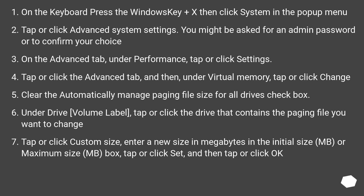Windows 8: On the keyboard press the Windows key plus X, then click System in the pop-up menu. Tap or click Advanced System Settings. You might be asked for an admin password or to confirm your choice. On the Advanced tab, under Performance, tap or click Settings. Tap or click the Advanced tab. Then, under Virtual Memory, tap or click Change. Clear the 'Automatically manage paging file size for all drives' checkbox. Under Drive/Volume label, tap or click the drive that contains the paging file you want to change. Tap or click Custom Size. Enter a new size in megabytes in the Initial Size or Maximum Size box. Tap or click Set, then tap or click OK.